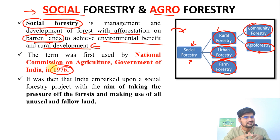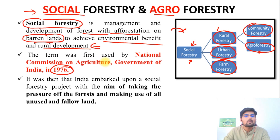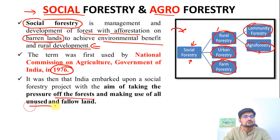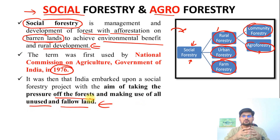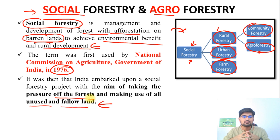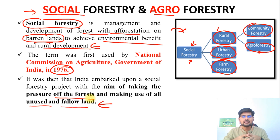Right from the 1972 Stockholm Conference, environmentalism was prominent. So in 1976 India embarked upon a social forestry project with the aim of taking the pressure off the forest and making use of all unused and fallow lands. The idea was to upgrade those degraded lands — that's the important aspect of social forestry and agroforestry — to use these unused or fallow lands by actually planting trees over them.